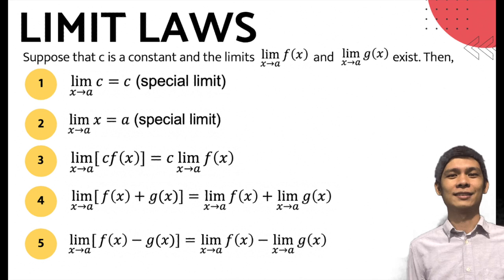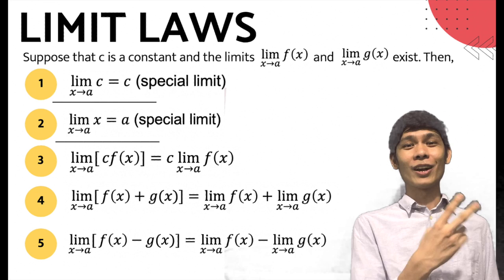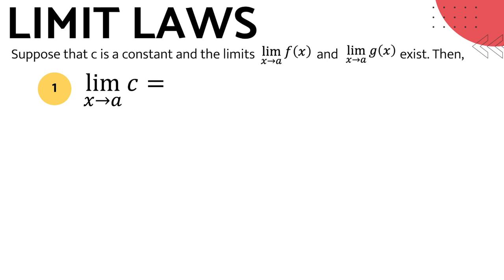But how many limit laws do we have? We actually have around 11 limit laws, but for this video, we will be focusing more on the first five limit laws. The first two limit laws are called special limits or basic limits.